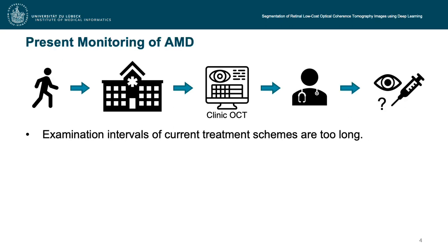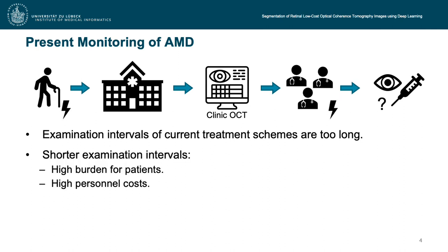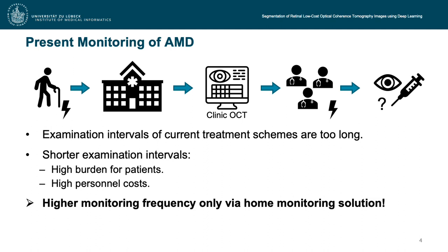The monitoring of AMD is regulated by treatment schemes, which require that the disease status of each patient is assessed at regular intervals. This requires a visit to the eye clinic, where the physician uses OCT to decide whether treatment is necessary. However, the examination intervals of current treatment schemes are too long and not adapted to patient-specific recurrence patterns. Shorter examination intervals would allow for early treatment but cause a high burden for mostly elderly patients and high personal costs.